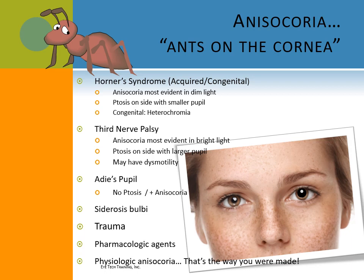Siderosis bulbi is where the patient has a retained iron foreign body that rusts in their eye. It can cause an anisocoria as well as a heterochromia — the eye with the retained iron foreign body typically will have a darker colored iris. Trauma can also cause anisocoria, as can pharmacologic agents: mydriatics, miotics, cycloplegics, and illicit drugs. Finally, there is physiologic anisocoria, which means that's just the way they were born.